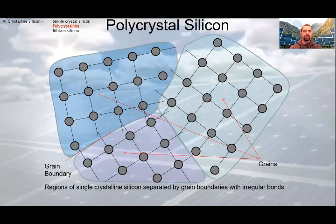On this slide, you can see the structure of the polycrystal. The regions of the three single crystalline silicon is separated by grain boundaries with irregular bonds.